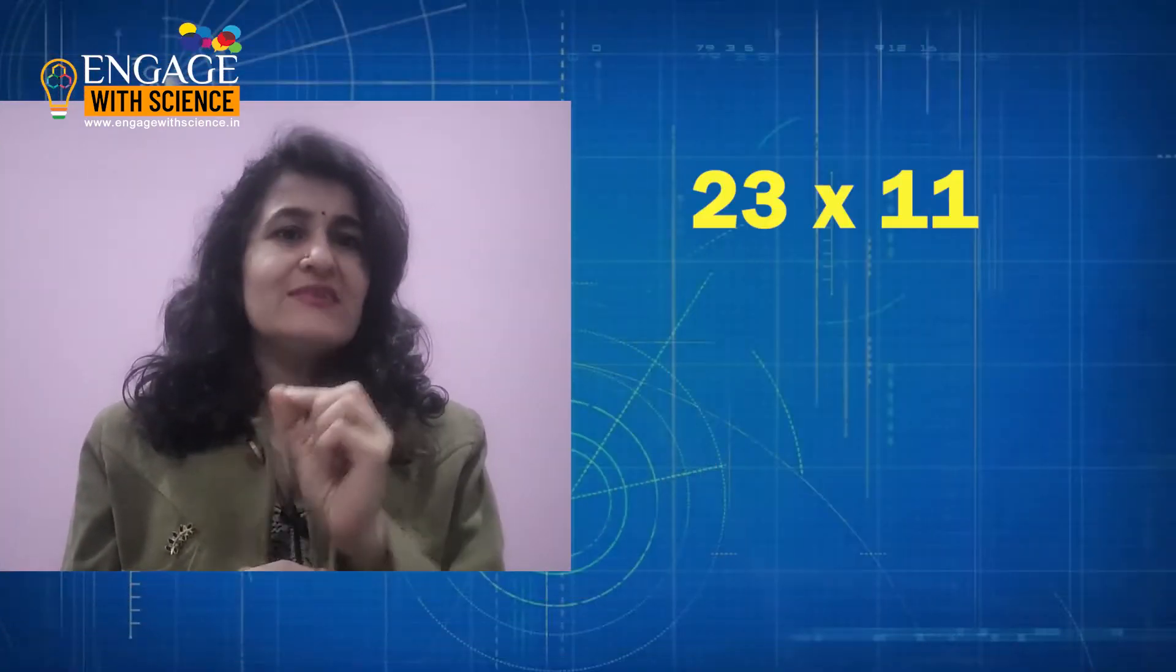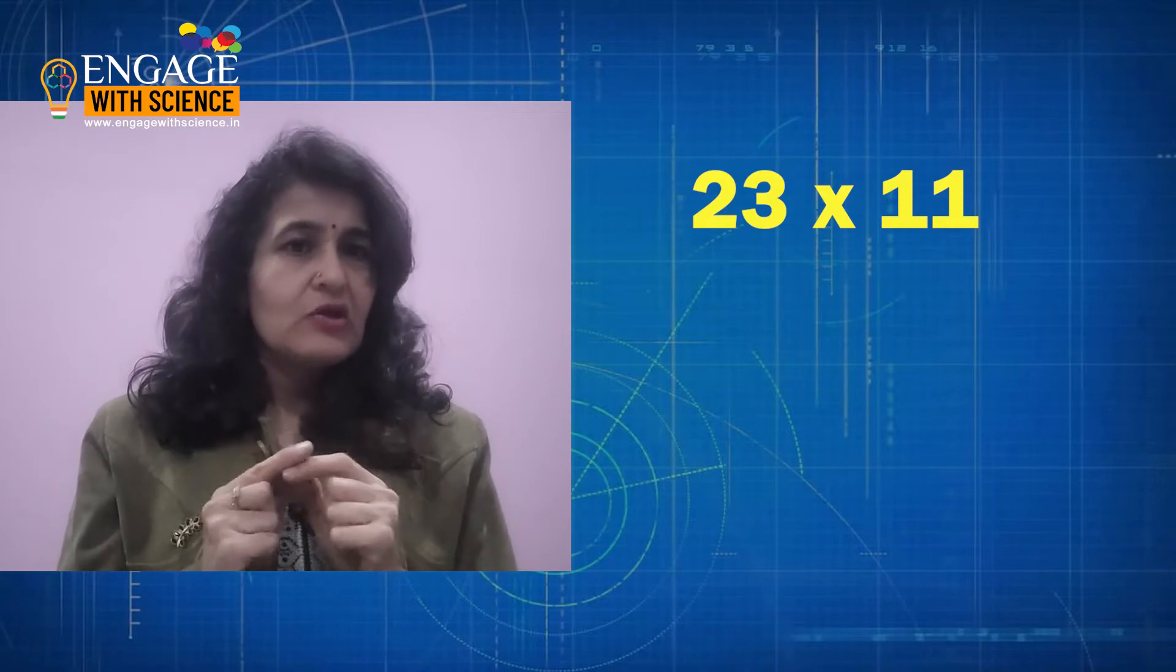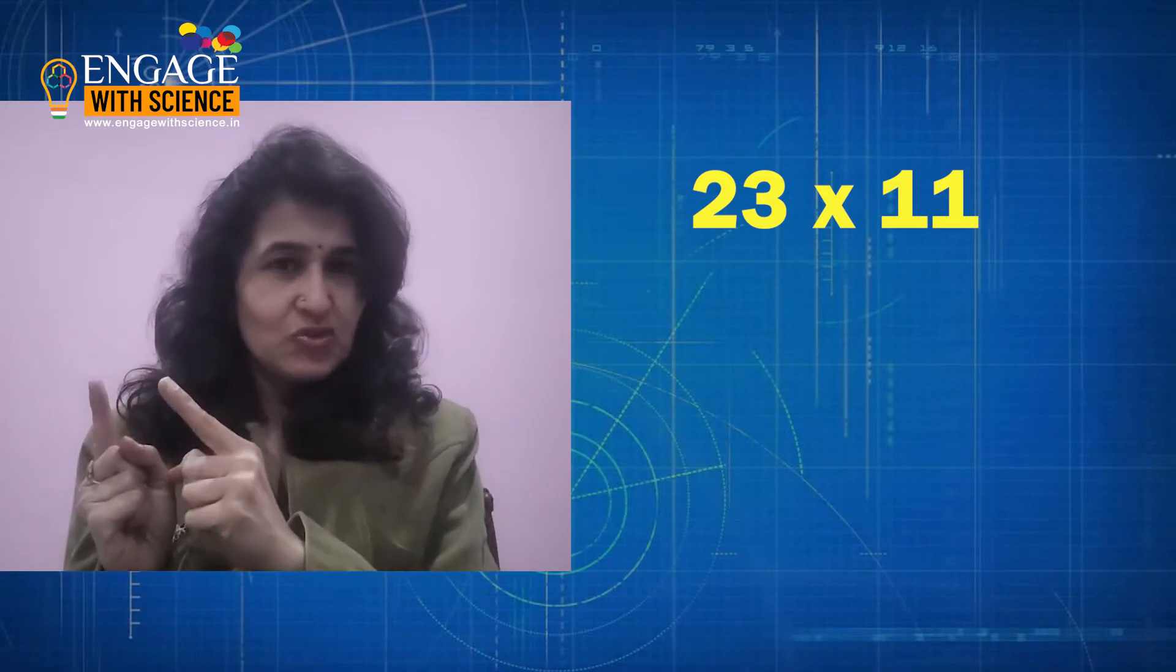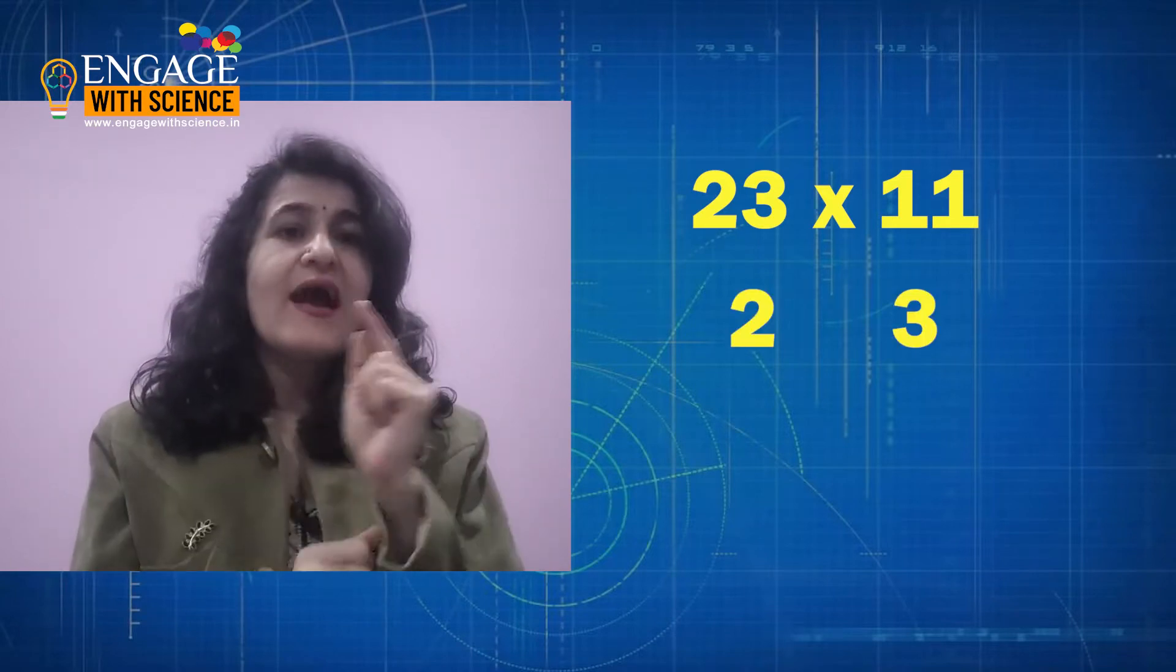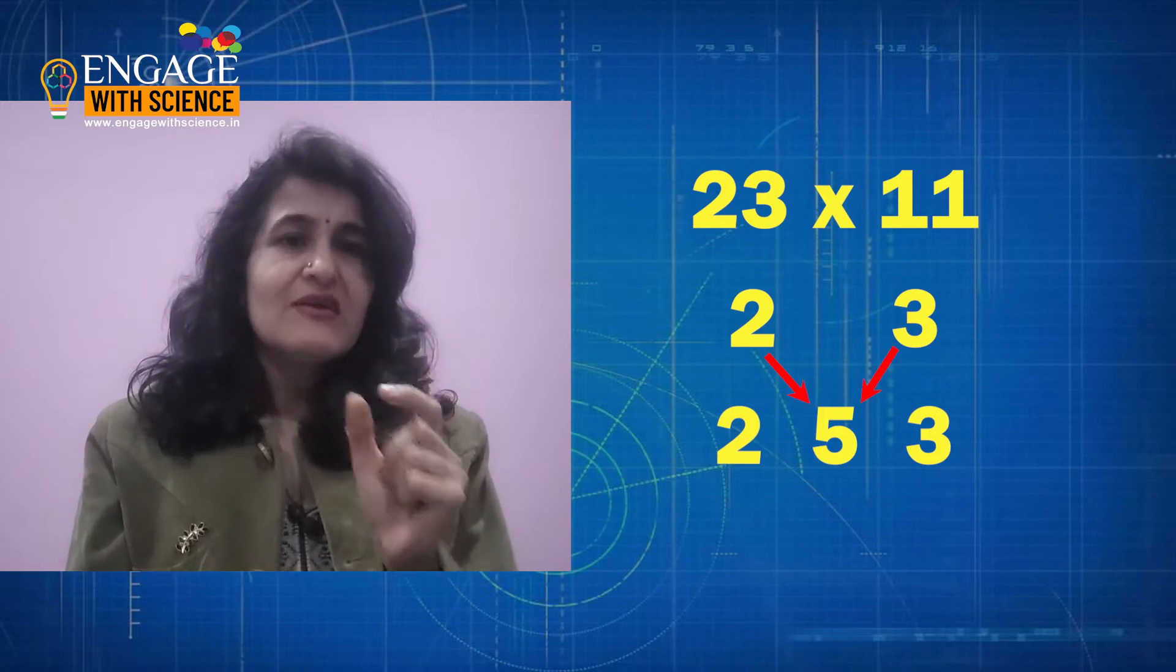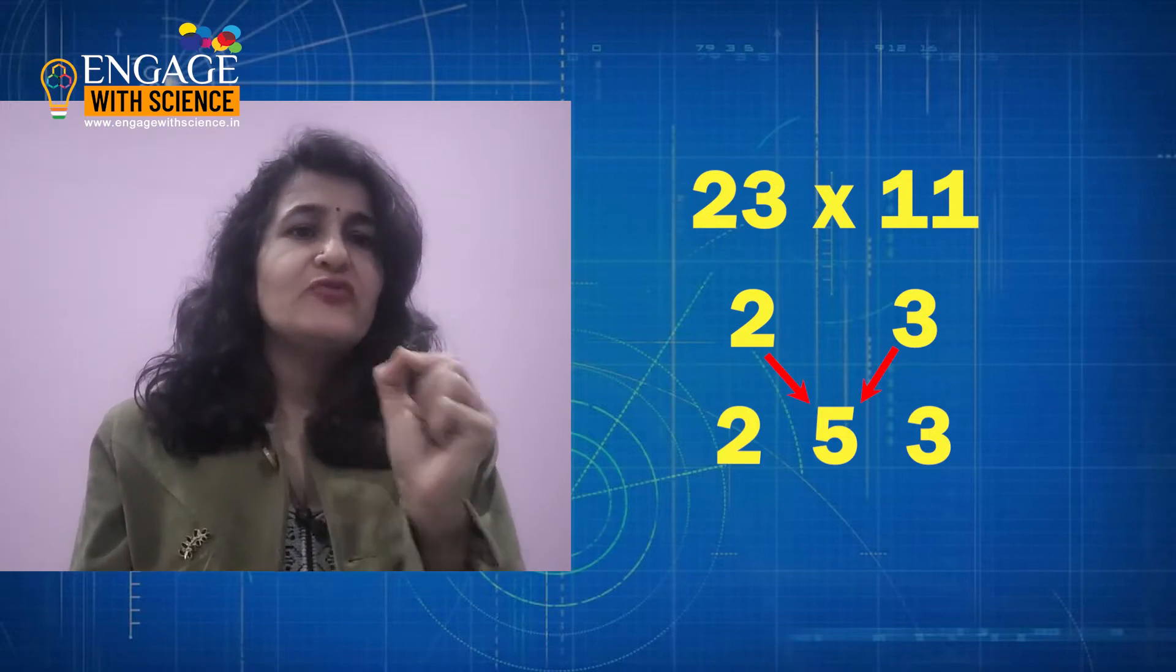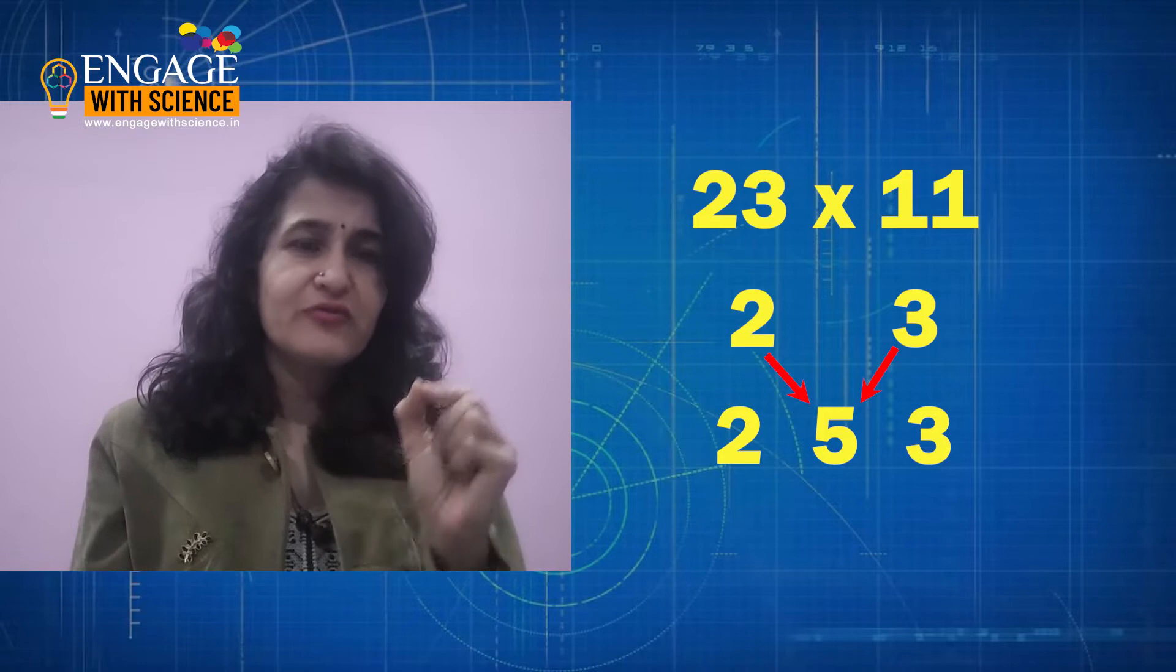Hello students, today we will learn a very interesting trick, how to multiply any number with 11 orally. So let us start. Let us take the first example: 23 into 11. You will write 2 and 3 as it is, add 2 plus 3, it is 5. So the answer is 253.